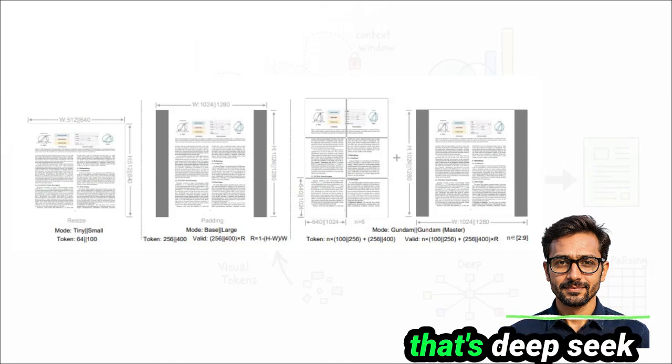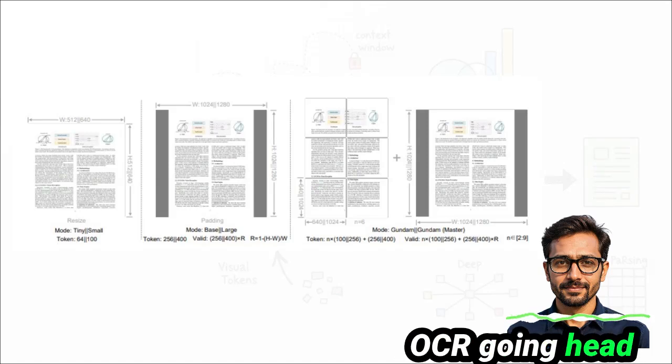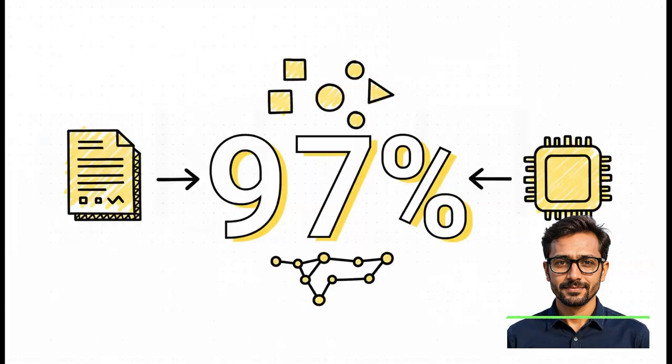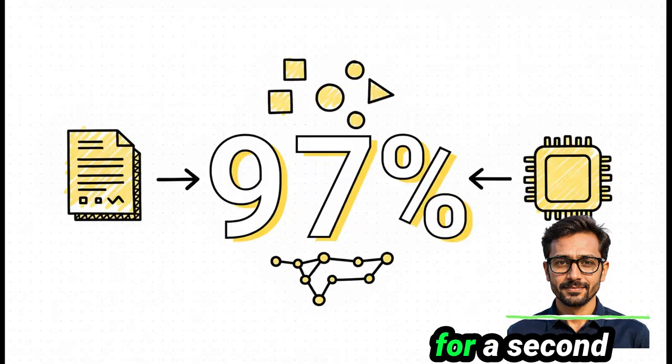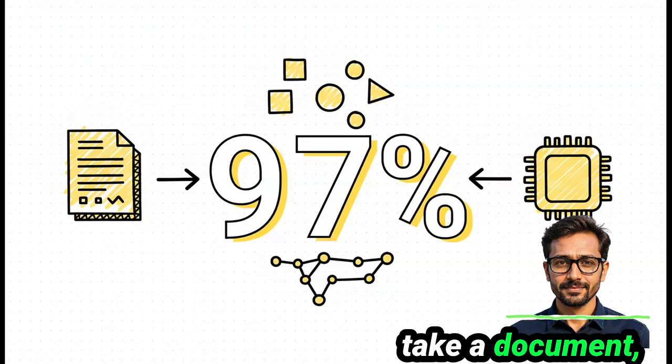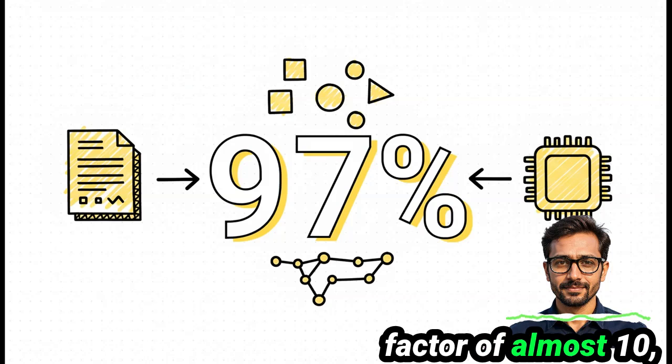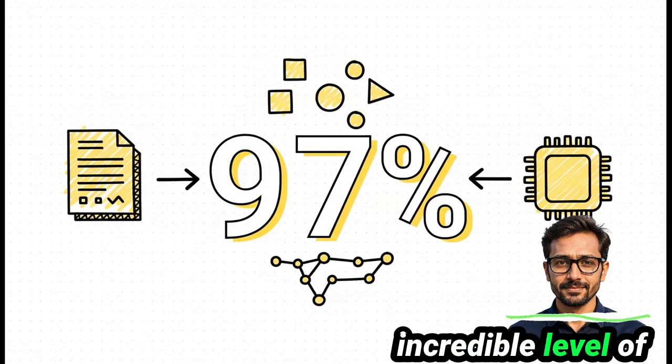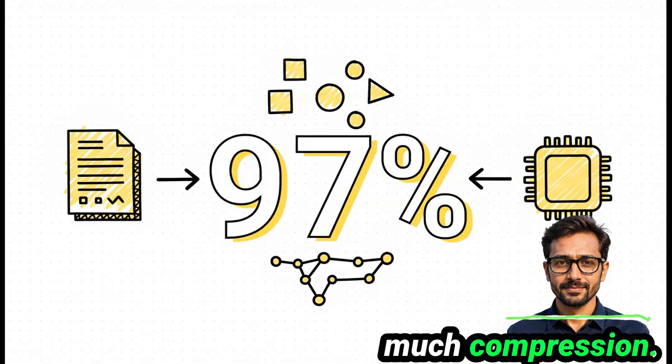And the chart on the right? Well, that's DeepSeek OCR going head to head with other top models and it's not even close. I mean, just look at this number for a second because it is wild. The model can take a document, compress it by a factor of almost 10 and still reconstruct the text with 97% precision. That is an absolutely incredible level of accuracy for that much compression.